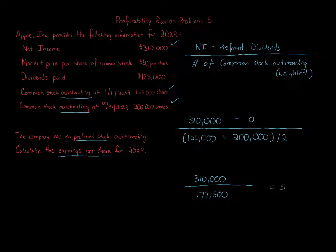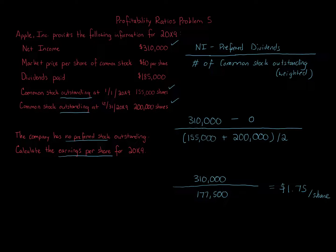Our earnings per share is $1.75 per share. Whether that's good or bad depends on the business. Most of the time when looking at this, you're either an existing investor evaluating whether to stay or move to another company, or you're a potential investor comparing different options. So that's $1.75 per share for earnings per share — and that is our calculation. Straightforward. There's a bit of weighting to worry about, and make sure you pay attention to outstanding shares, but other than that, it's pretty straightforward.